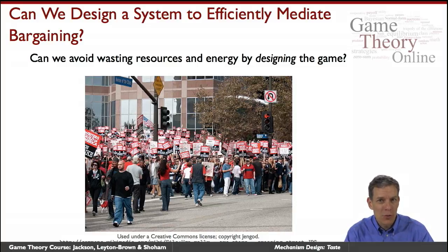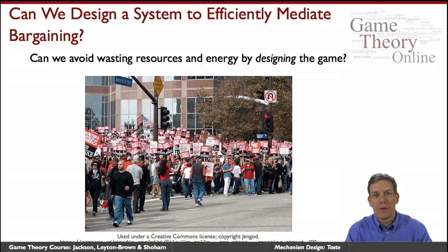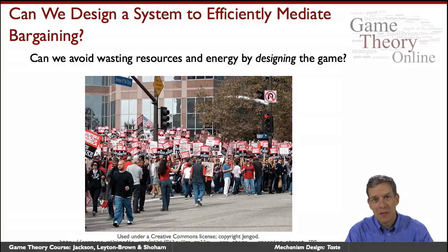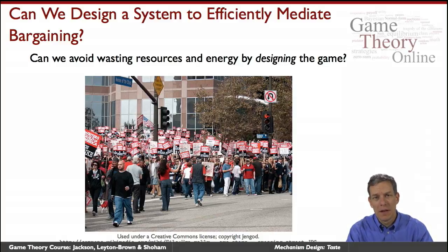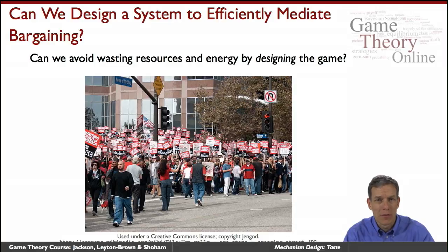In terms of complete information game theory, if people can really see what the payoffs are and you look at a particular bargaining game, generally you would have situations where people would tend to reach agreements. They can look down the tree, figure out what's going to happen, unravel things, and reach an agreement.